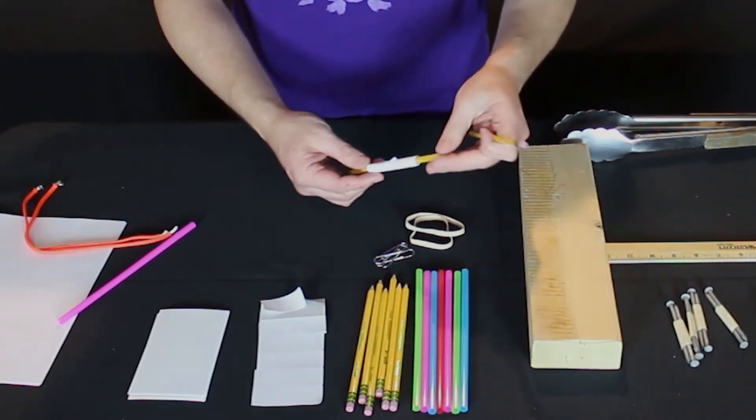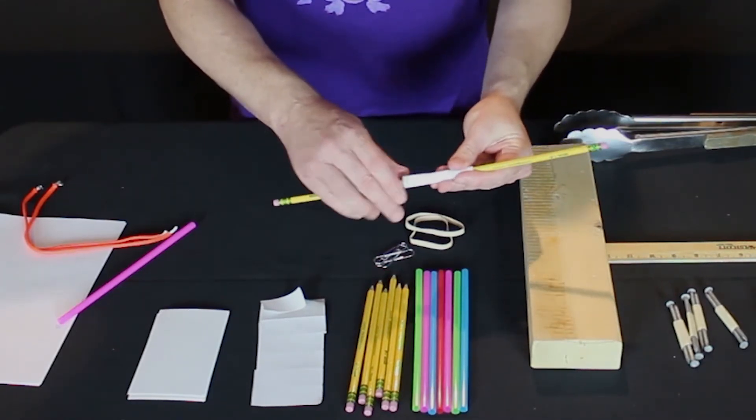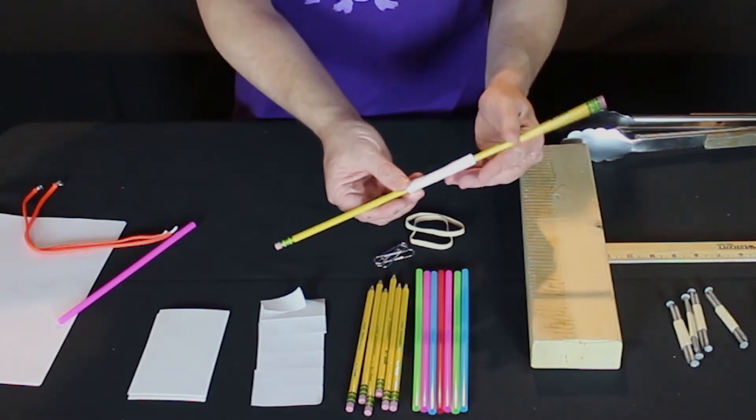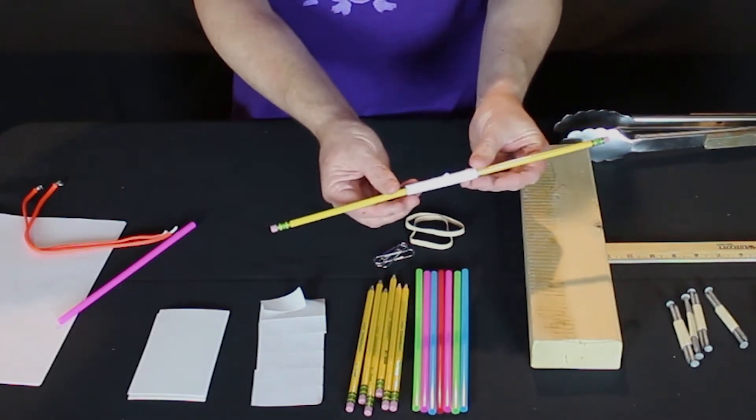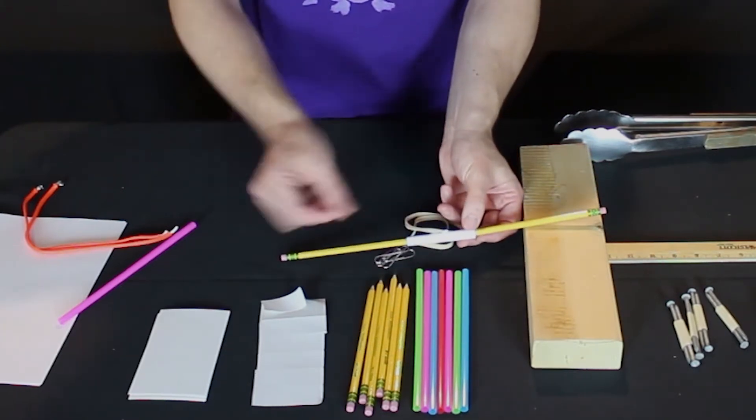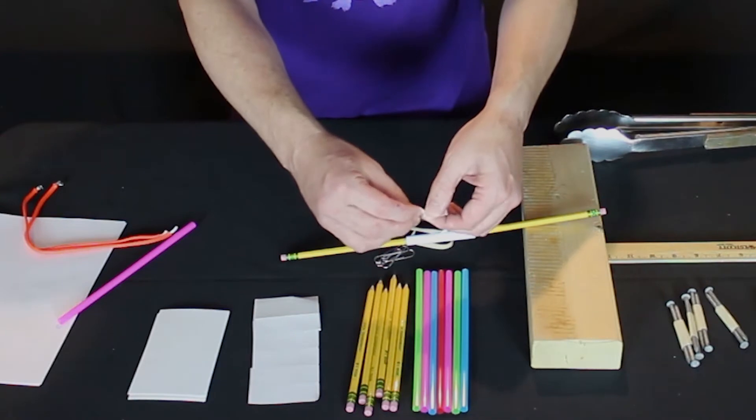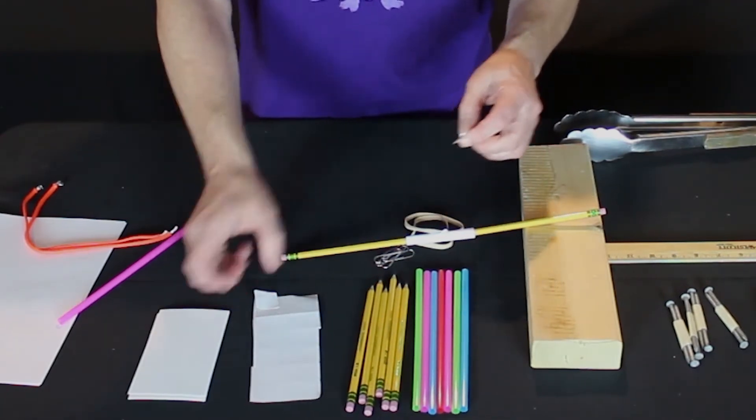Now we want this to go over both pencils. We need to make sure that this paper stays on those pencils. So we're going to use the rest of the mailing label. Rip that into two pieces.